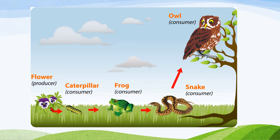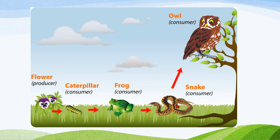So, the flower is eaten by the caterpillar, and the caterpillar gets energy from the flower. Then the frog eats the caterpillar and gets energy from it. The snake eats the frog and gets energy from the frog. The owl eats the snake and gets energy from the snake. Do you understand now?